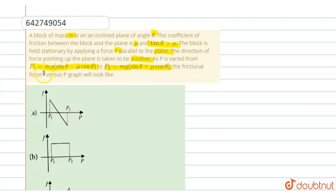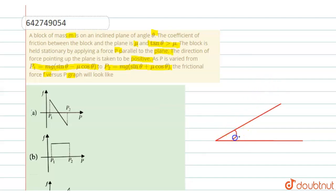In this question you have to find the graph between friction force f and p. First, we draw a diagram to understand it — an inclined plane having angle theta with a block of mass m on it.